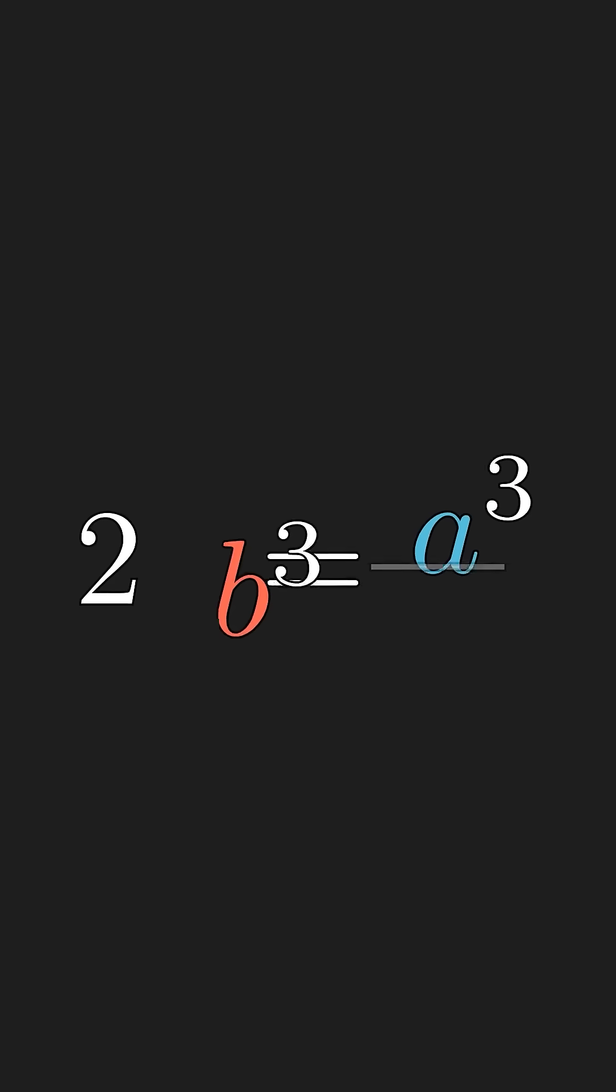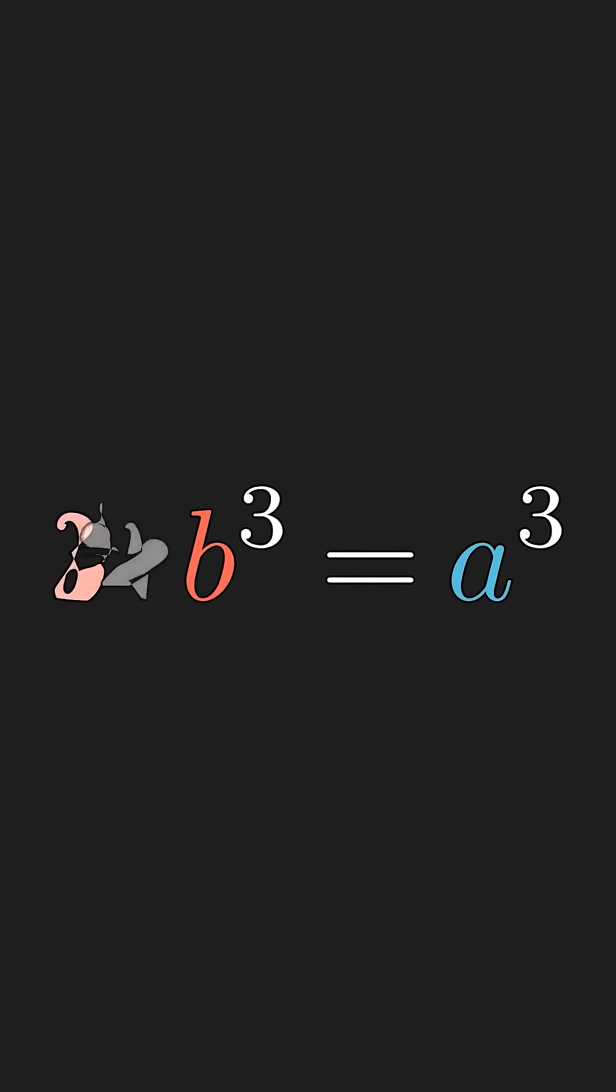Then we cube both sides, then multiply both sides by b cubed. Then we split up the two copies.